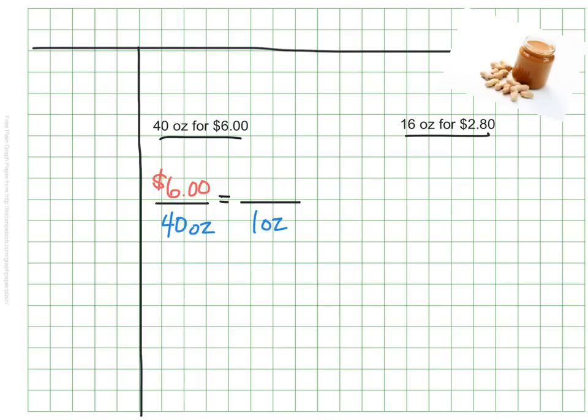The larger jar is $6 for 40 ounces, but I want to find out how much one ounce costs so I can compare it to one ounce of the smaller jar. To do that, I'm going to scale down by dividing by 40. I want to take my 40 ounces and divide it down to find just one of them. If I do that, I'll of course have to divide my $6 by 40.